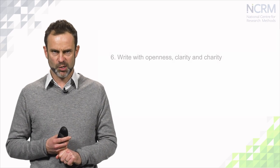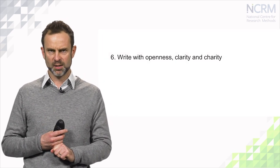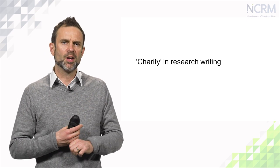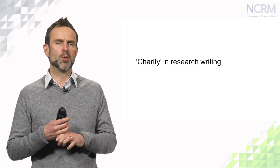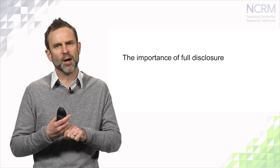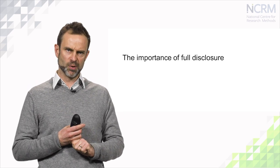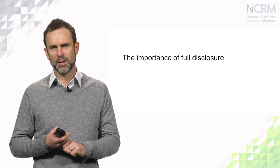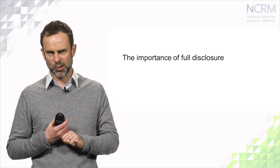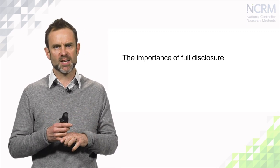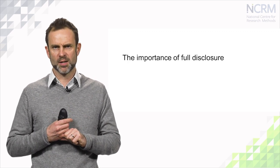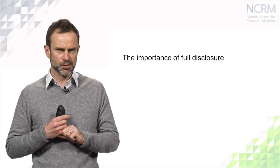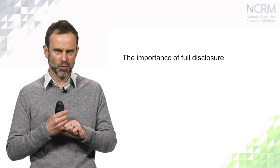The next principle is to write with openness, clarity, and charity. Charity means that when dealing with alternative positions and perspectives, you give them the benefit of the doubt before offering your critique. Openness and clarity are really about full disclosure — really explaining to your readers why you had to do this and why you decided to do that, without hiding anything. Most academic readers are bright and experienced people. If there's any sense that you're hiding something or not being fully honest about the methodological decisions you've made, they will be onto it and the credibility of your writing will suffer.